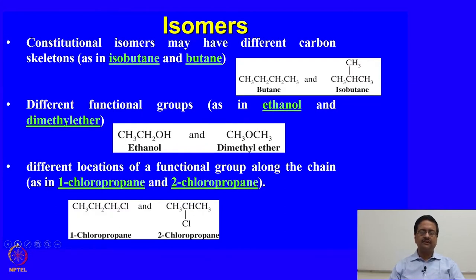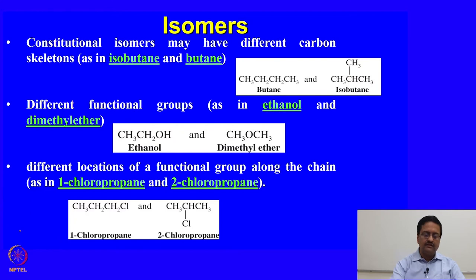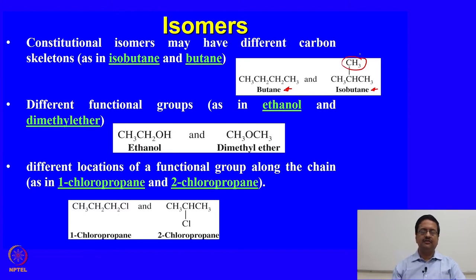When we try to first understand what constitutional isomers are, we should know that constitutional isomers may have different carbon skeletons. That means you may have the same molecular formula but a different carbon skeleton, as shown in this example where you can have butane in a chain or linear form, or butane having a branch using a methyl group, forming isobutane. That is a constitutional isomer.